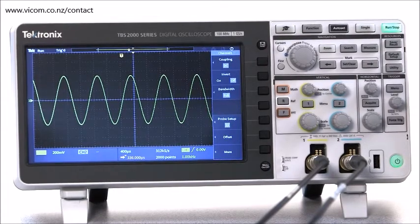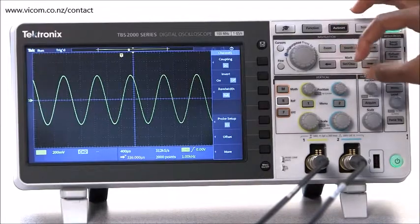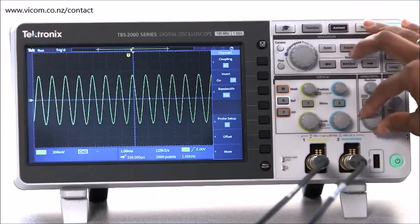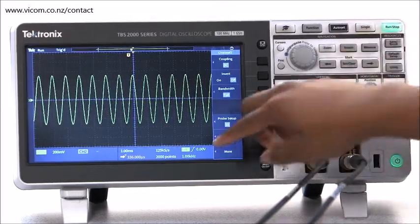On most digital oscilloscopes, as you change the time scale, the sampling rate also changes to make the best use of memory, as you can see here.